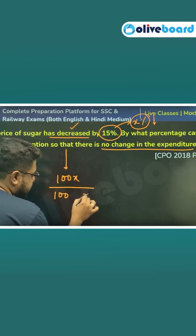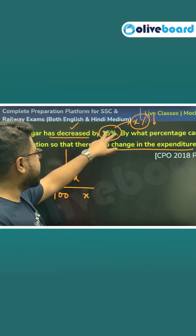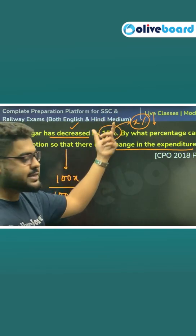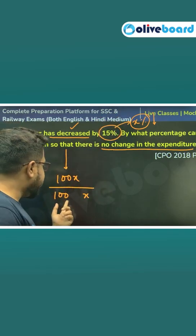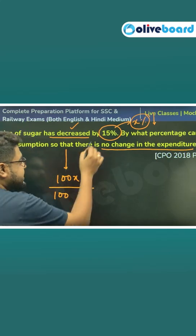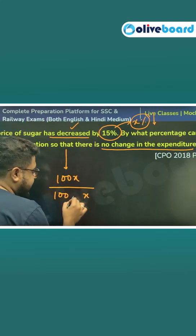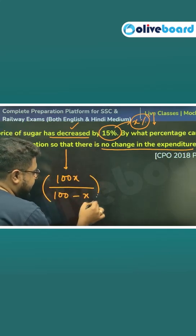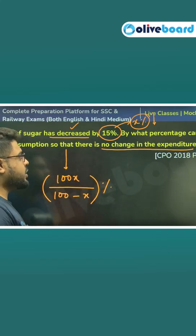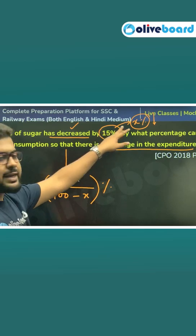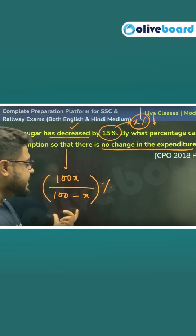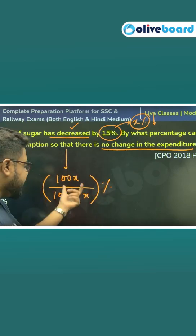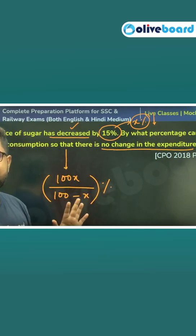In the last part, if the price increases, the formula was 100 divided by (100 plus x). In this case, if it decreases, it will be 100 minus x in the denominator. So if the price decreases, consumption will go up by 100x divided by (100 minus x) percent.